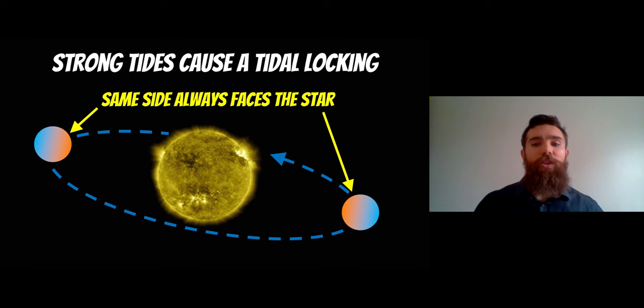Now they also have tidal locking. So because they're so close to their star they undergo tidal locking which causes one side of the planet to always face towards the star. So they will rotate once in the same period of time they do one orbital period. It takes the same time to rotate once as it does to go all the way around. So therefore one side always faces the star.